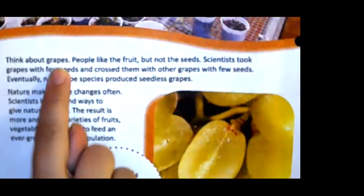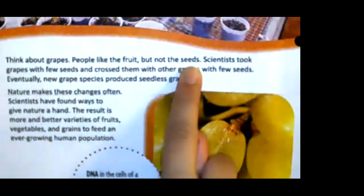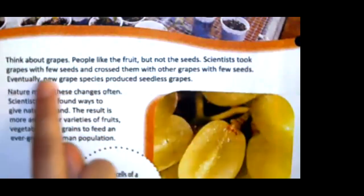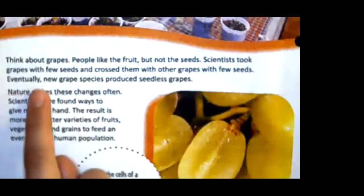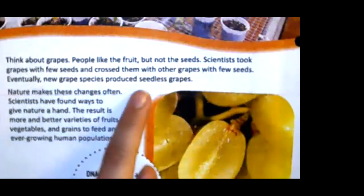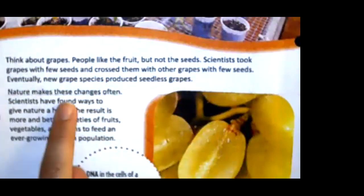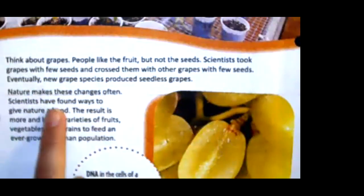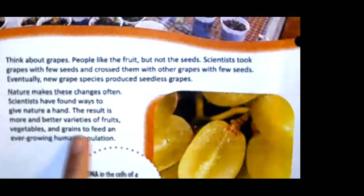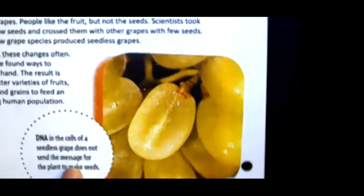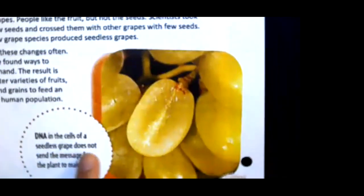Think about grapes. People like the fruit, but not the seeds. Scientists took grapes with few seeds and crossed them with other grapes with few seeds. Eventually, new grape species produced seedless grapes. Nature makes these changes often, and scientists have found ways to give nature a hand. The result is more and better varieties of fruits, vegetables, and grains to feed an ever-growing human population. DNA in the cells of a seedless grape does not send the message for the plant to make seeds.